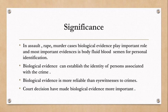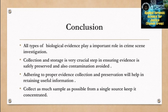Significance of biological evidence: first, in assault, rape, and murder cases, biological evidence plays an important role — the most important evidence being body fluids like blood and semen for personal identification. Second, biological evidence can establish the identity of a person associated with the crime. Third, biological evidence is more reliable than eyewitness testimony. Fourth, court decisions have made biological evidence increasingly important. In conclusion, all types of biological evidence play an important role in criminal investigation; collection and storage is a crucial step in ensuring evidence is safely preserved and contamination avoided.